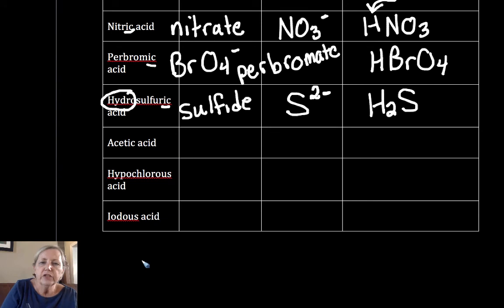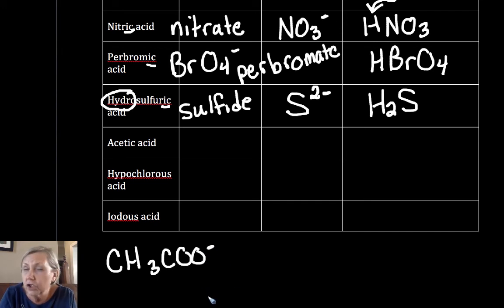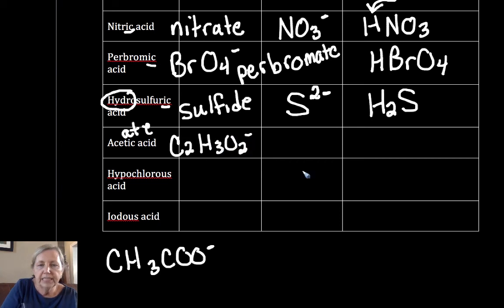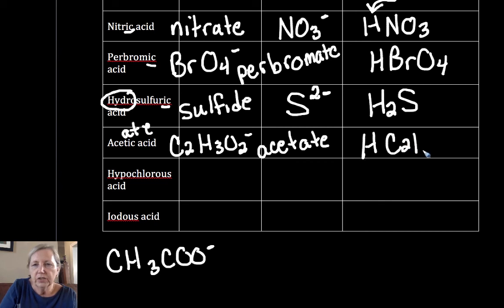Acetic acid. There's a few ways to write acetate. One way is to write it like this: CH3COO-. I like this because it implies a structure in a little bit more detail. But acetate is also written as C2H3O2-. So that's acetate. HC2H3O2.